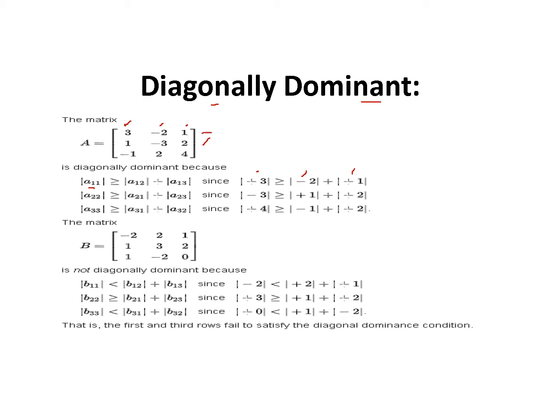Next, check A22: the absolute value of A22 must be greater than or equal to A21 plus A23. Similarly, check A33 greater than or equal to A31 plus A32. If any condition is not satisfied, you can shuffle the equations — the first equation can be made second or third, and so on — until the matrix is diagonally dominant.